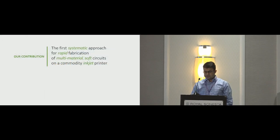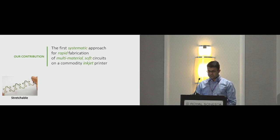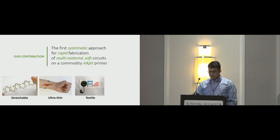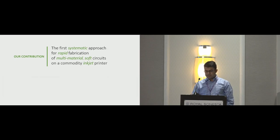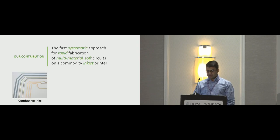Here we present the first systematic approach for rapid fabrication of multi-material soft circuits on a commodity inkjet printer. Our techniques support a wide set of soft-based substrate materials such that they are stretchable, ultra-thin, compatible with textile, and reshapable. Our techniques also support multi-material printing of wide variety of functional inks, including conductive inks and isolating inks, along with graphical inks.